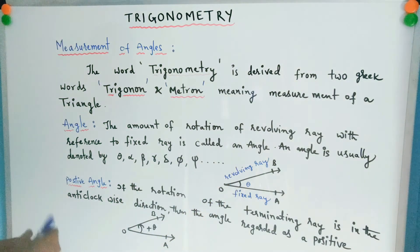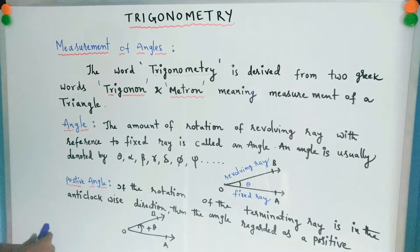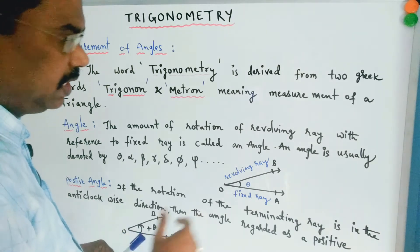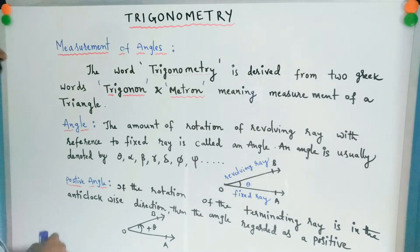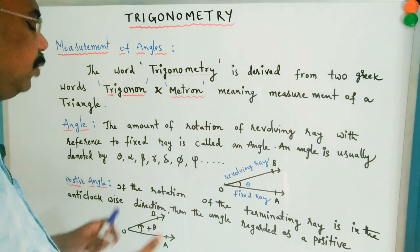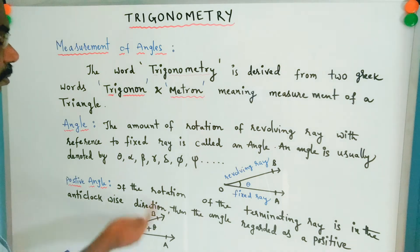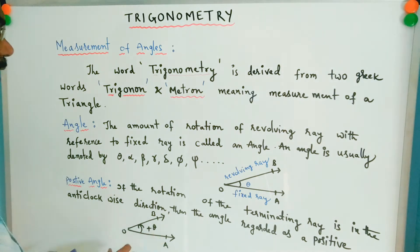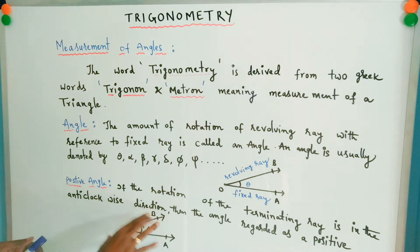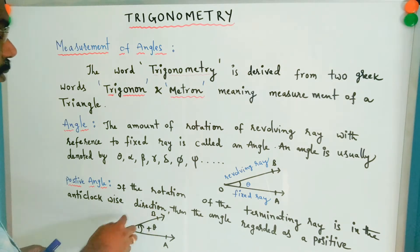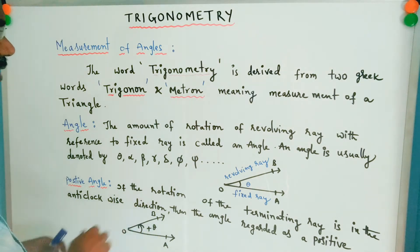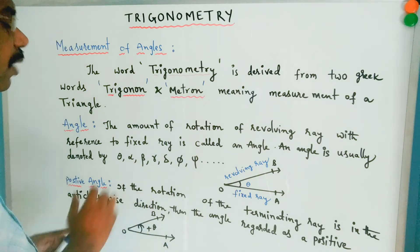What is a positive angle? If the rotation of the terminating ray is in the anti-clockwise direction, the angle is regarded as a positive angle. Here OA is the fixed ray and OB is the revolving ray — anti-clockwise direction is called a positive angle.